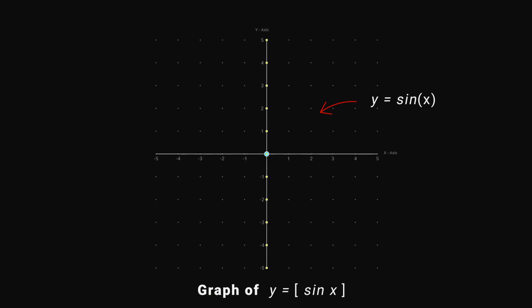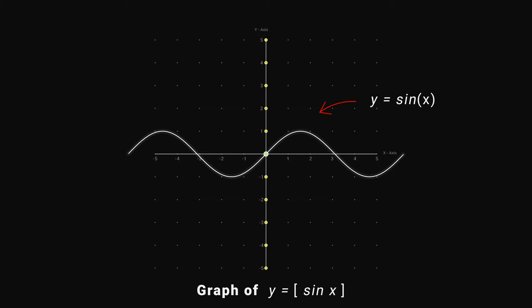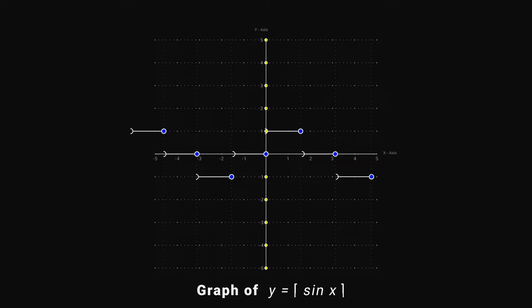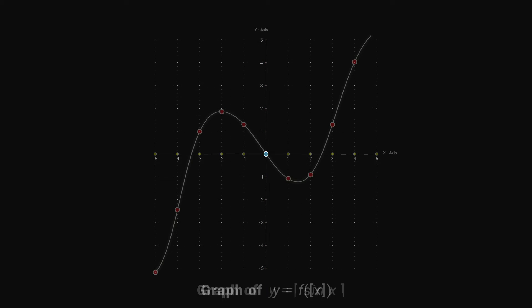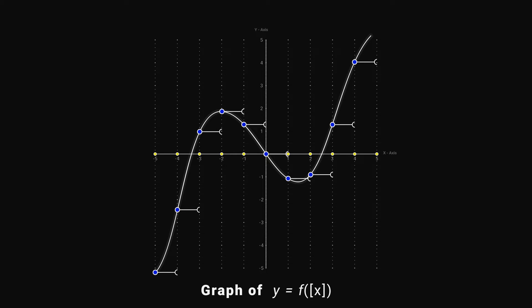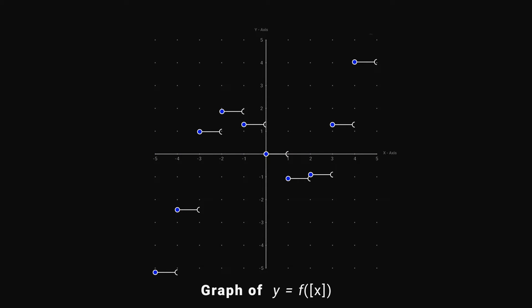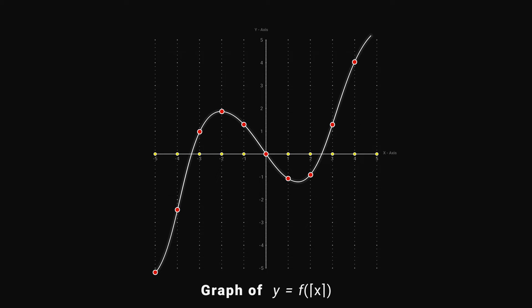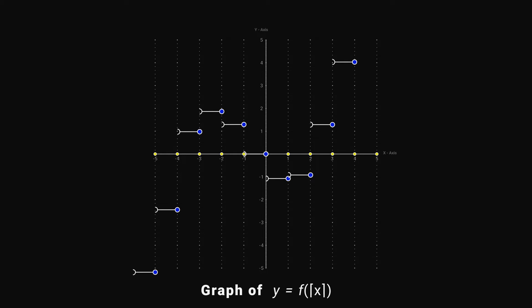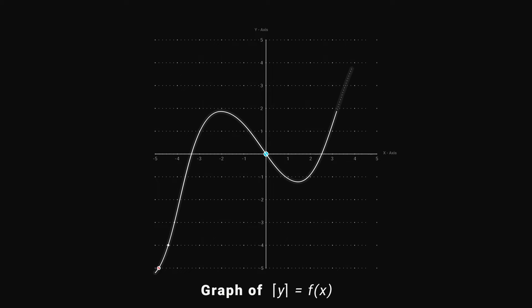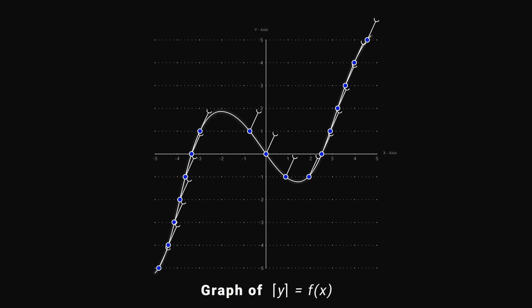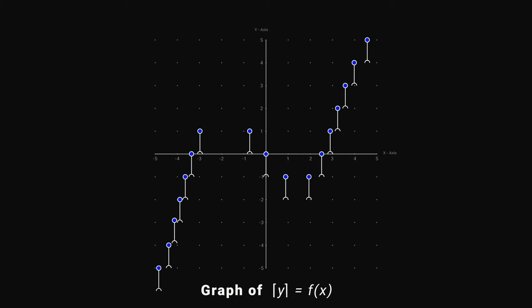For example, when y equals sine of ⌊x⌋, we replace the floor function with the ceiling function. For the floor function, we draw horizontal line segments from the point to its right-hand side. But when we replace with the ceiling function, we draw horizontal line segments from the point to its left-hand side. For the one-unit line segments, the floor function draws them toward the upper end, but the ceiling function draws these segments in the opposite direction.